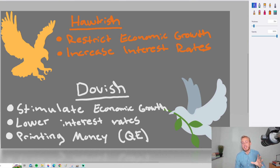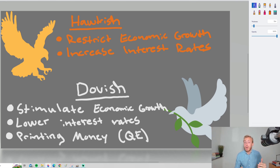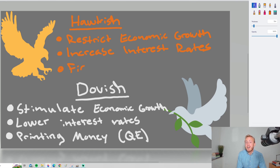The Federal Reserve right now wants to slow down the economy, which is why we are increasing interest rates. Being hawkish — the main reason is often to fight inflation.